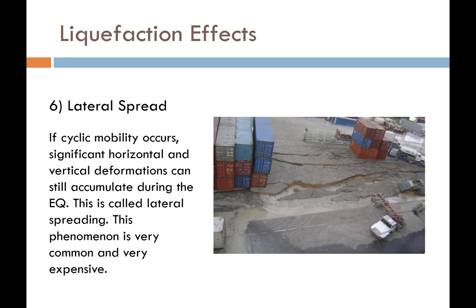The sixth effect is lateral spread displacement. This picture from a port in Haiti following the 2010 earthquake shows how the ground has moved towards the open face near the port, causing significant damage to the infrastructure. Lateral spread is a function of cyclic mobility — if liquefaction and cyclic mobility occur, we can sustain very large horizontal deformations. This phenomenon is very common and very expensive, and is most commonly seen around rivers, ports, canals, areas with high groundwater, and slopes.